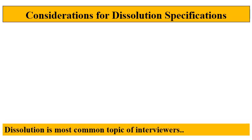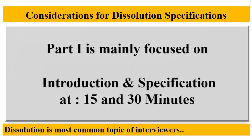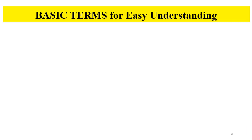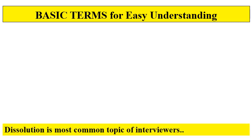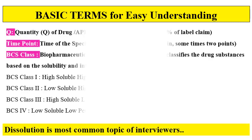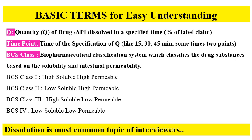In this part, we will mainly see the introduction of the topic and the specification at 15 and 30 minutes. The basic term Q needs to be understood first. Q is the quantity of drug or API dissolved in a specific time, referred to as a percentage of the label claim, and it is always given in percentage.